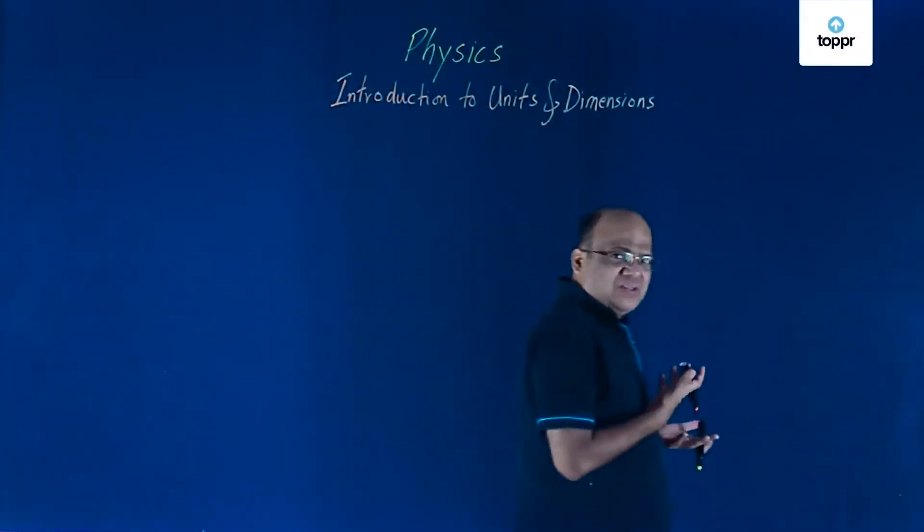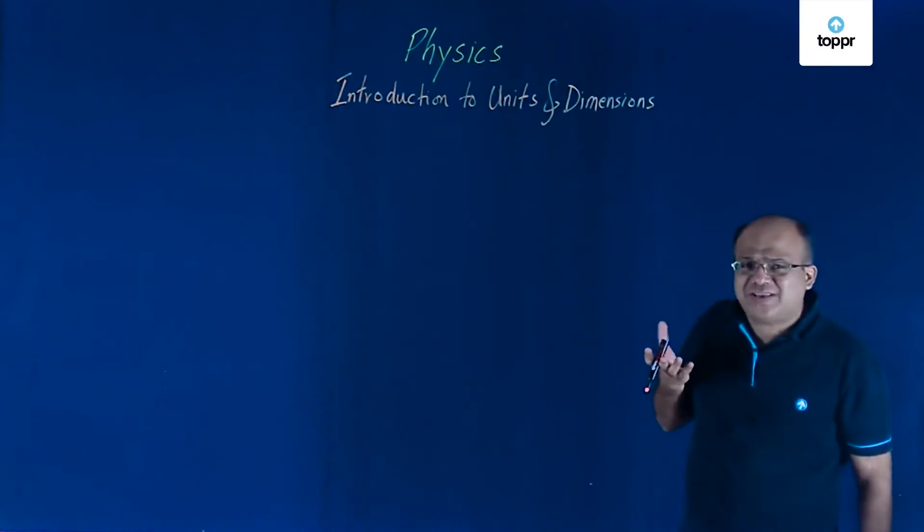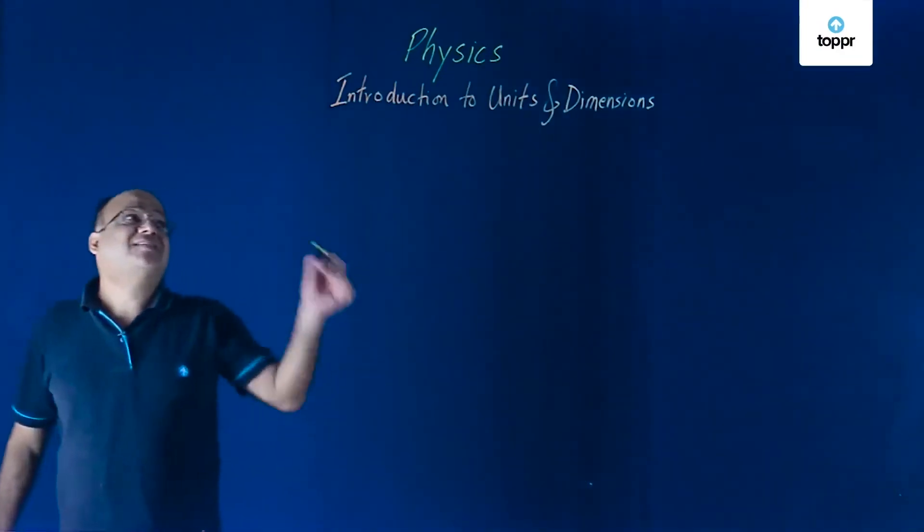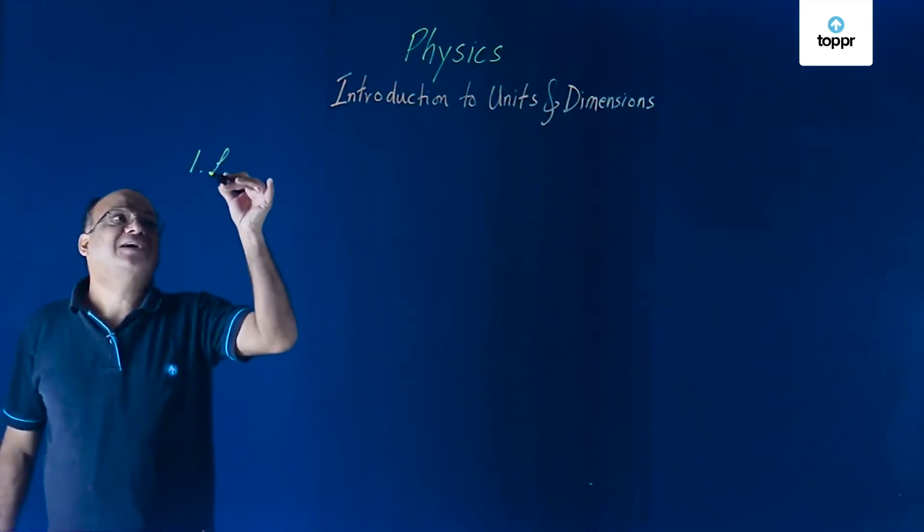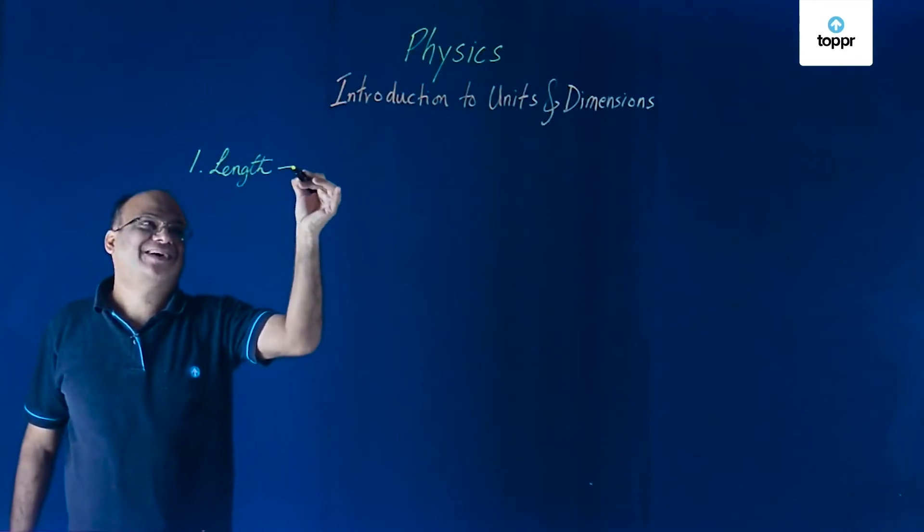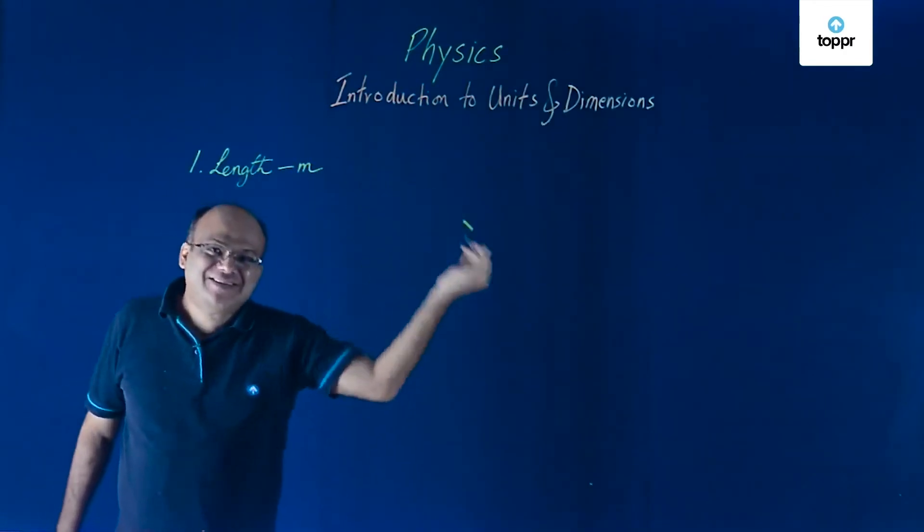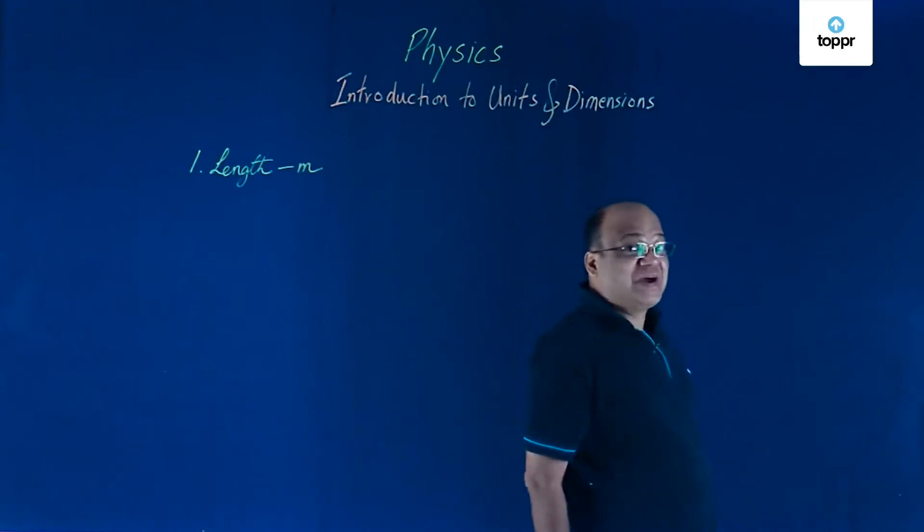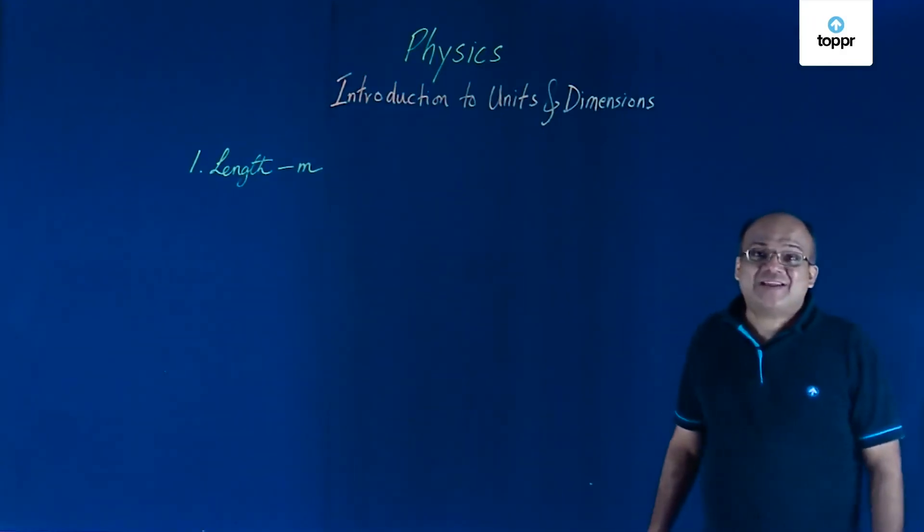We learn about the seven fundamental quantities in SI. First one is length. Length is measured in meters. One meter is the distance traveled by light in vacuum in 1 divided by 299,792,458 seconds.